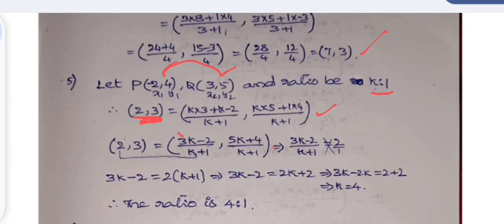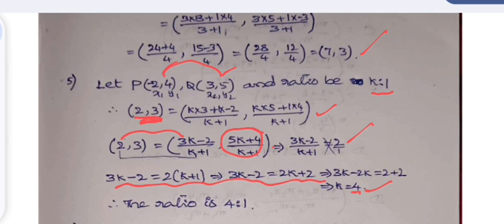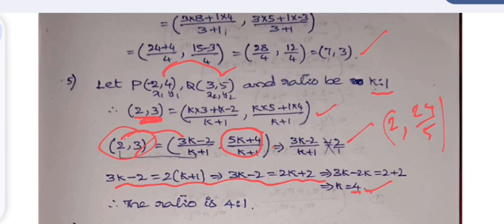Comparing x-coordinates, the value of k is calculated and found to be 4. However, this value of k must also satisfy the y-coordinate. Substituting k = 4 into (5k + 4)/(k + 1) gives 24/5, not 3. So the problem has an error — if the point were (2, 24/5) instead of (2, 3), the answer would be correct. Regardless, the method is demonstrated and can be used to find any such ratio.